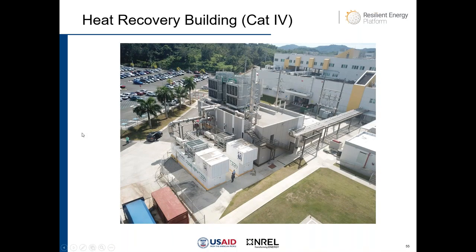This aerial photo shows the back of the hospital with the cogeneration facilities. The white containers are the engines, and these are the dump radiators that dissipate heat if it is not consumed in the heat recovery building. This is the exhaust gas line transporting exhaust gas to the interior of the heat recovery building. The heat recovery lines are around the building, and from there, chilled water and hot water go to the hospital. The electrical connection is underground.